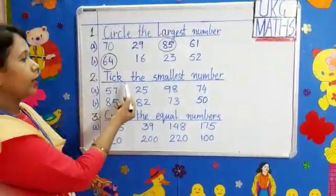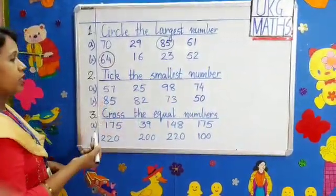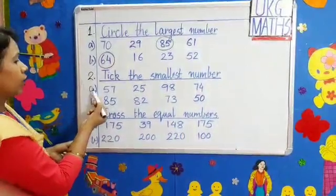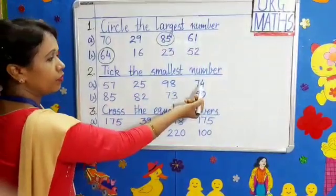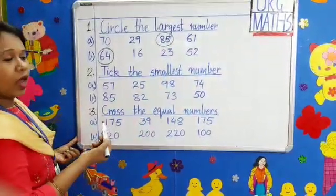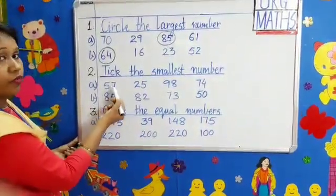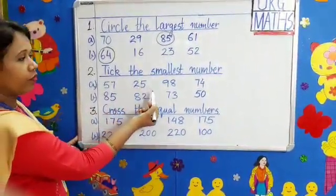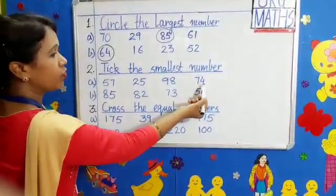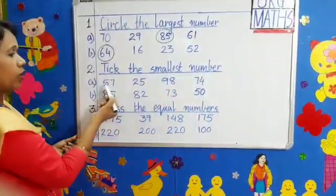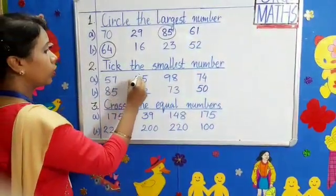Question 2: Tick the smallest number. Smallest means we have to see the smallest number, the smaller one. Question A: 57, 25, 98, 74. Here also we have to see the first digit. We have 5 in 57, 2 in 25, 9 in 98, and 7 in 74. So which is the smallest one? Yes, 2, 25. So we will tick 25.